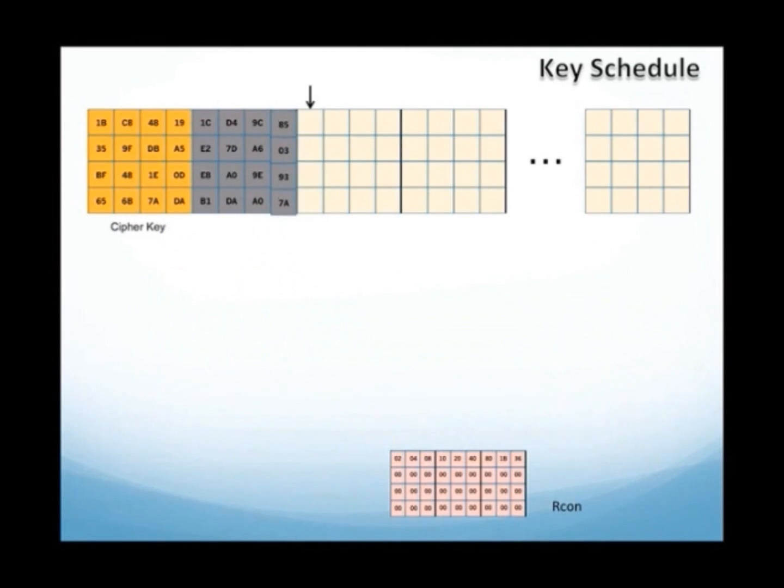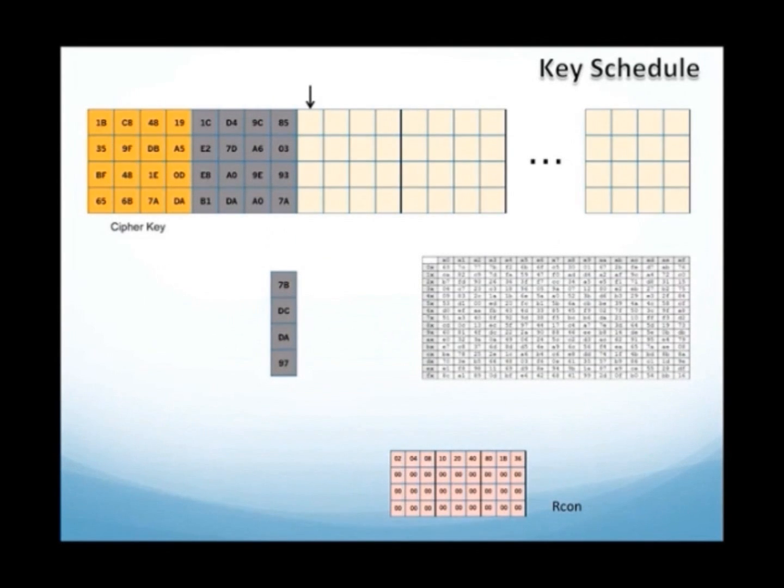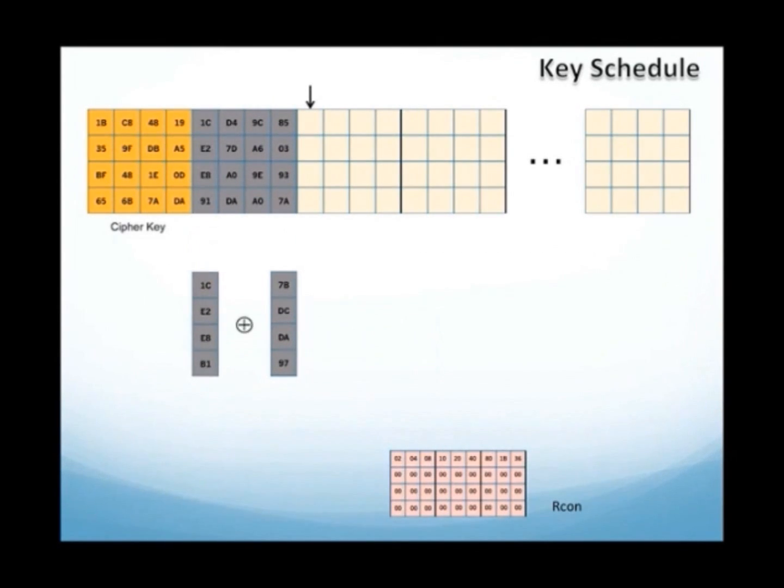For the subsequent round keys, the process is the same, considering that the first column of each round key undertakes a different transformation. This way, all of the ten, in this example, round keys are obtained.